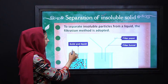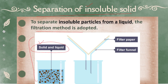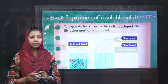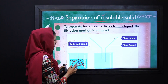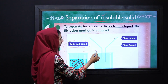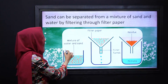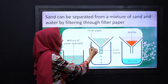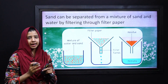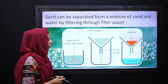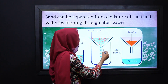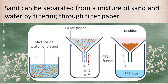For example, we have a mixture of solid and liquid — sand and water — where there are insoluble particles in the liquid. We separate this mixture by using the technique of filtration. We have the mixture of water and sand and we will separate it using a funnel with filter paper. The pure liquid collected is called the filtrate, and the solid that remains is the residue.